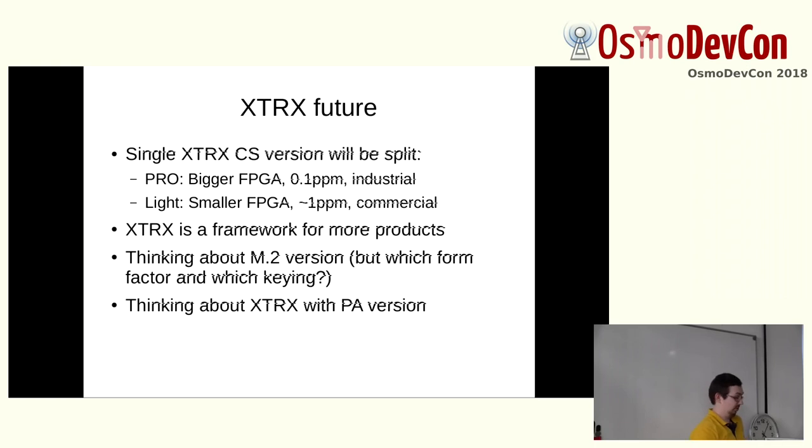What will be in the future? Since CrowdSupply version has one Xtrex, we're thinking to do two options like pro version, mostly used for industrial embedded applications, and light version for commercial usage. Xtrex is not just a board, it's almost a framework. We'll be using it to build more products. Currently there are two things we're thinking about: M2 version, but for M2 it's always complicated which form factor, which key to utilize. Please give our feedback because for us it's really hard to guess. Another thing we're thinking about is Xtrex with power amplifier. They may be during this year or may well not. We'll see. Thank you.